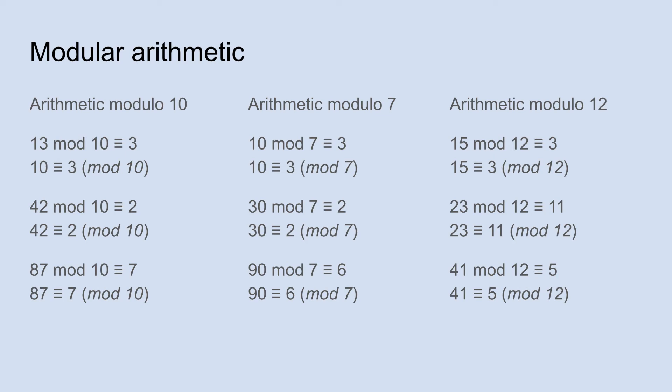So 10 mod 7 is asking the question, what's the remainder when you divide 10 by 7? Another way to think about it is how much more is 10 than the greatest multiple of 7 that's less than 10. So 10 is 3 more than 7, and that's why 10 mod 7 is 3.